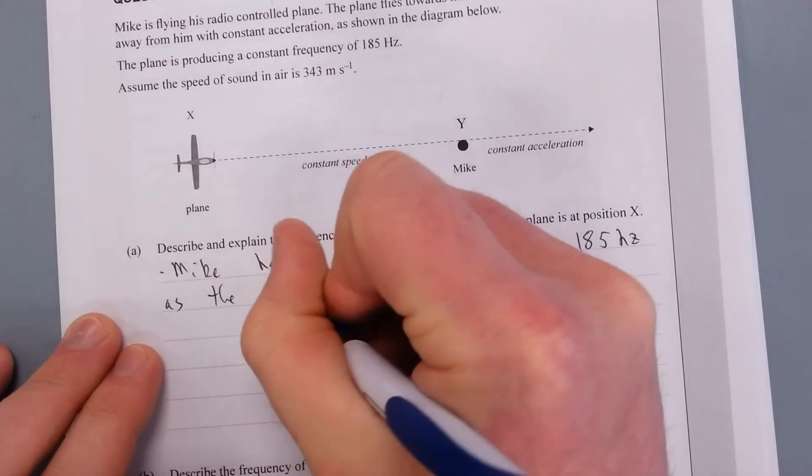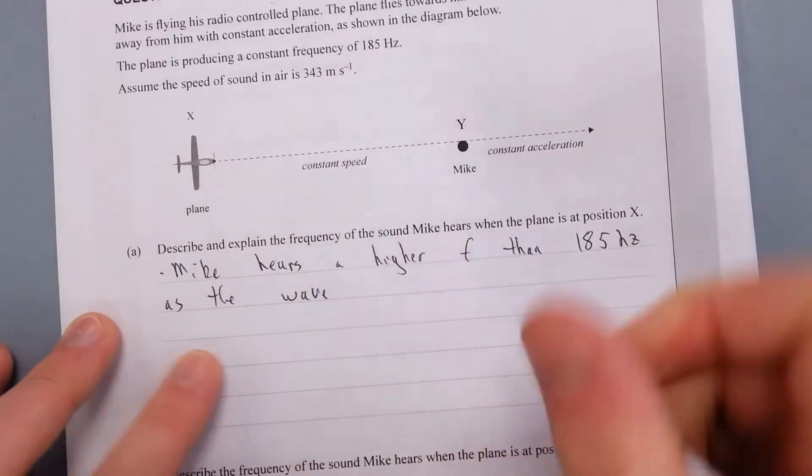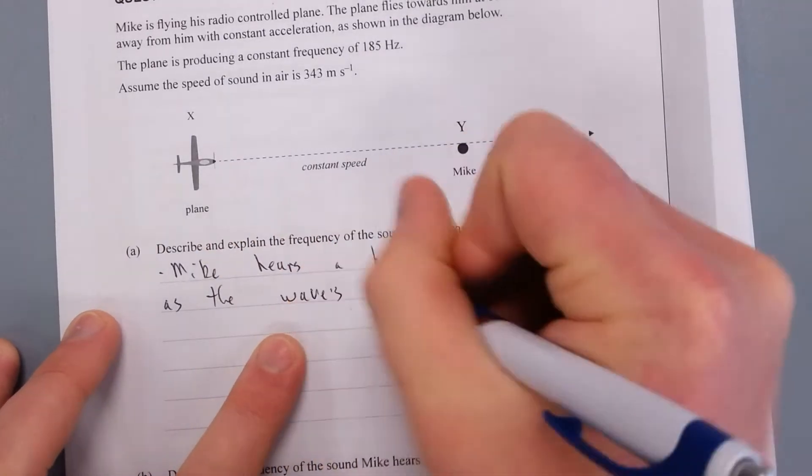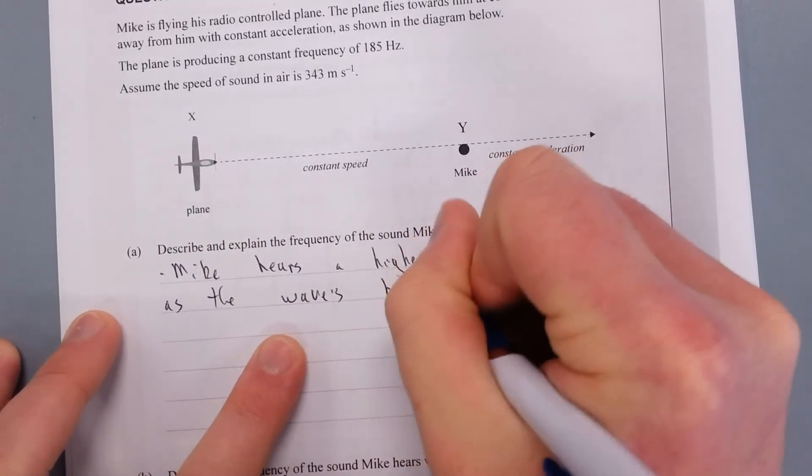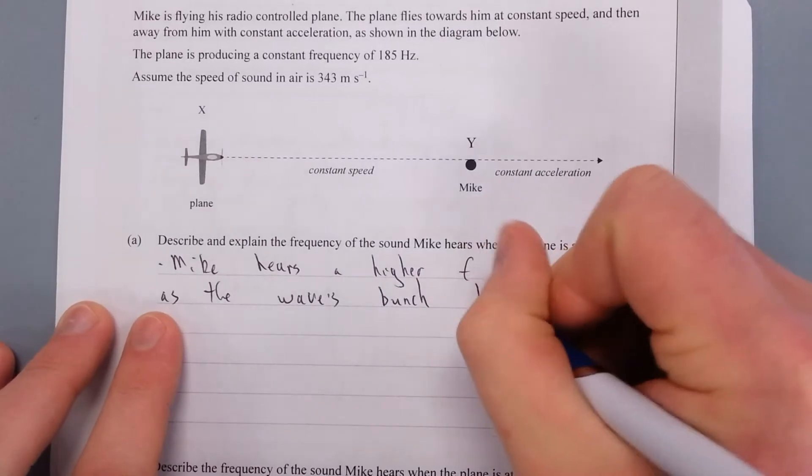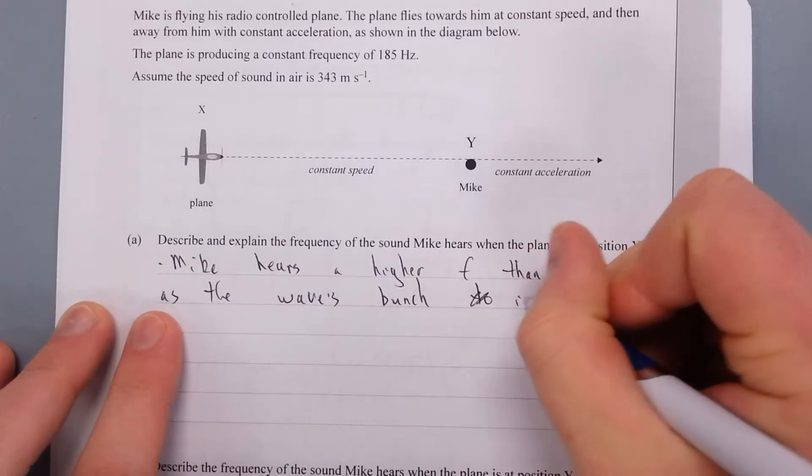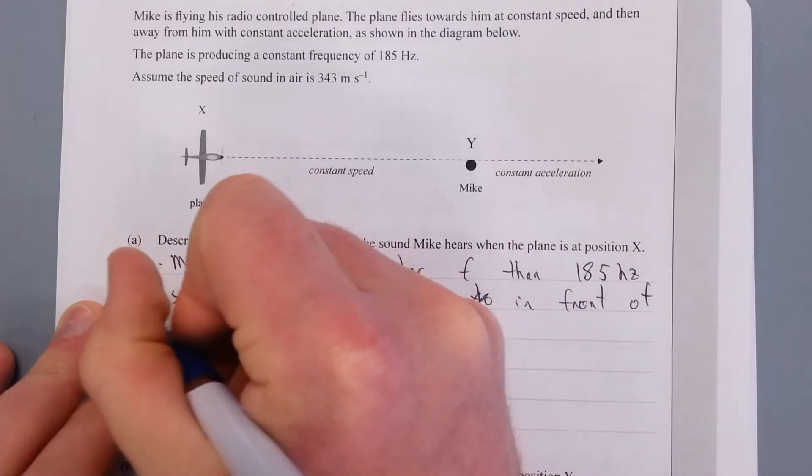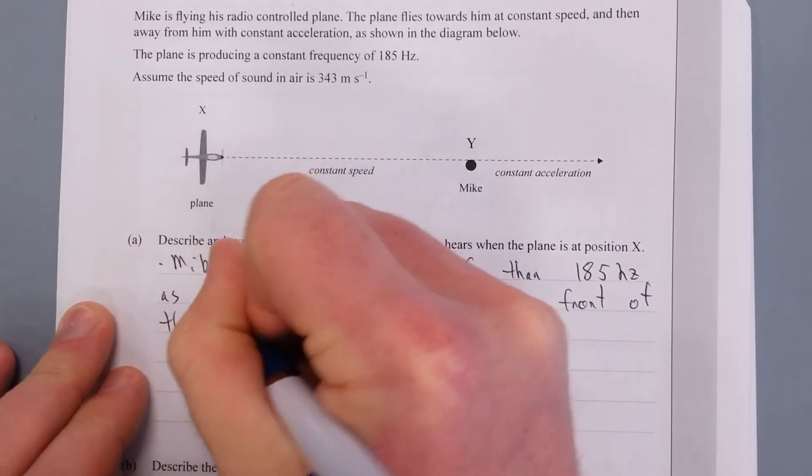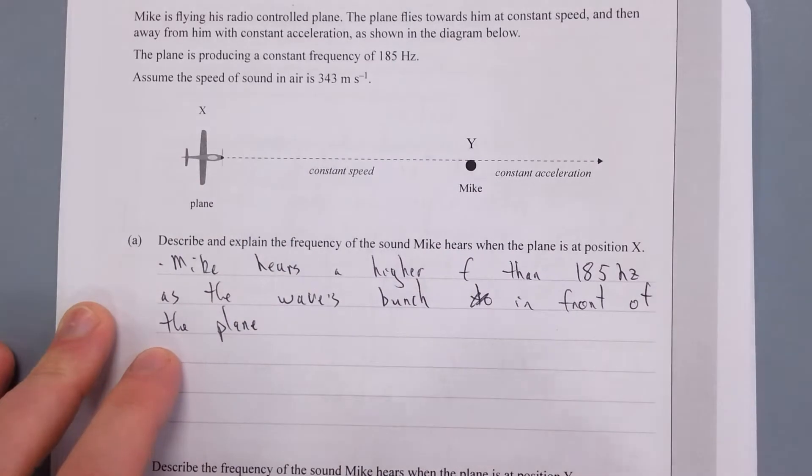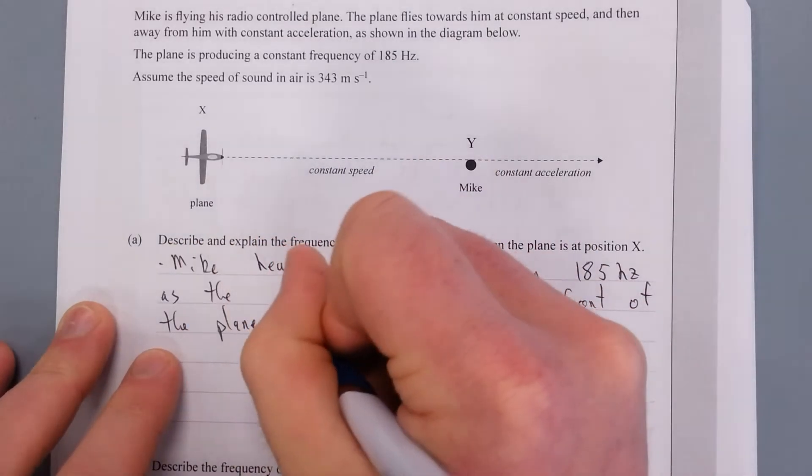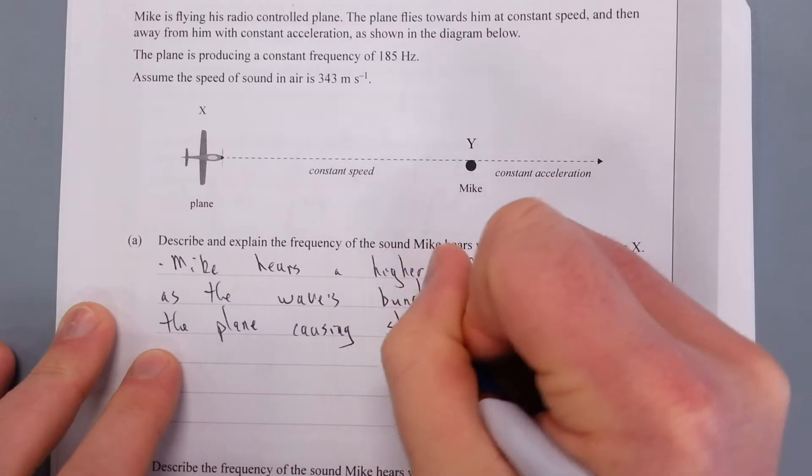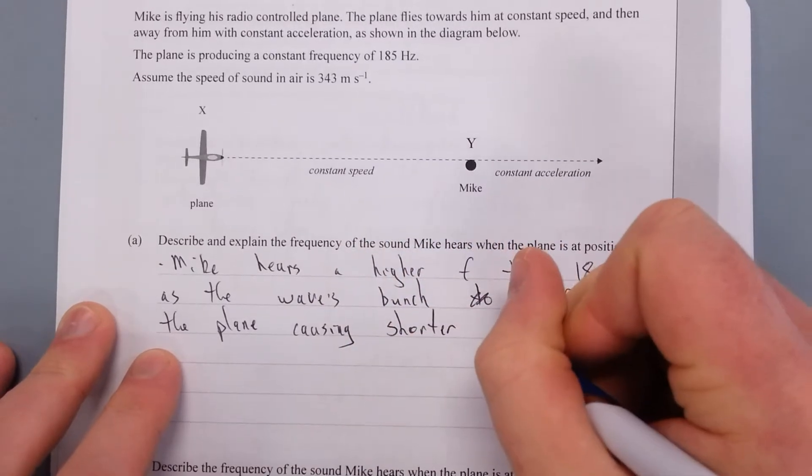We've said what he hears. Now why. So that's what he hears. As the waves bunch together, bunch in front, in front of the plane, causing shorter wavelengths.